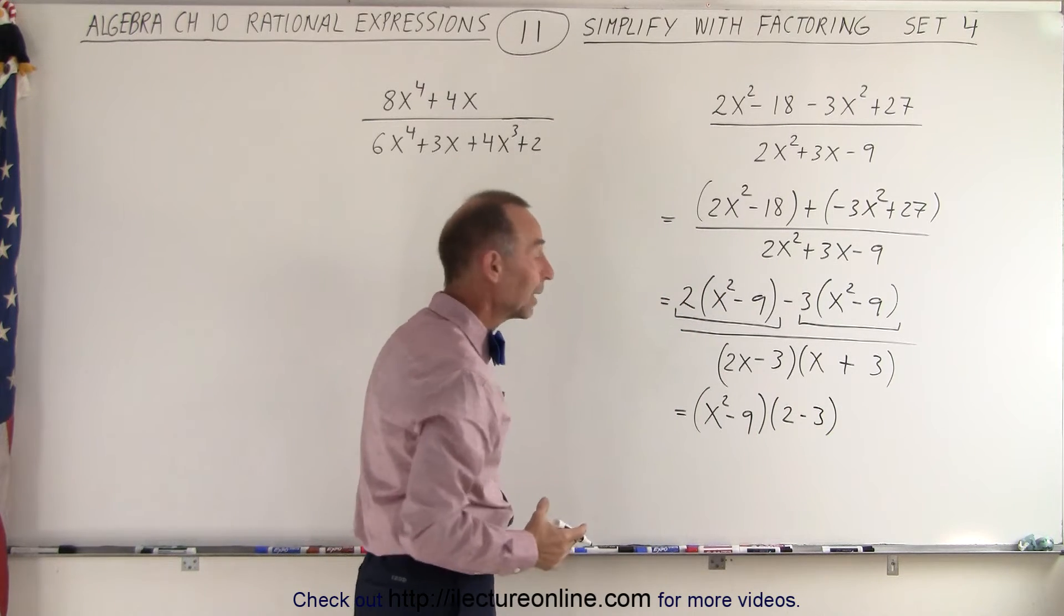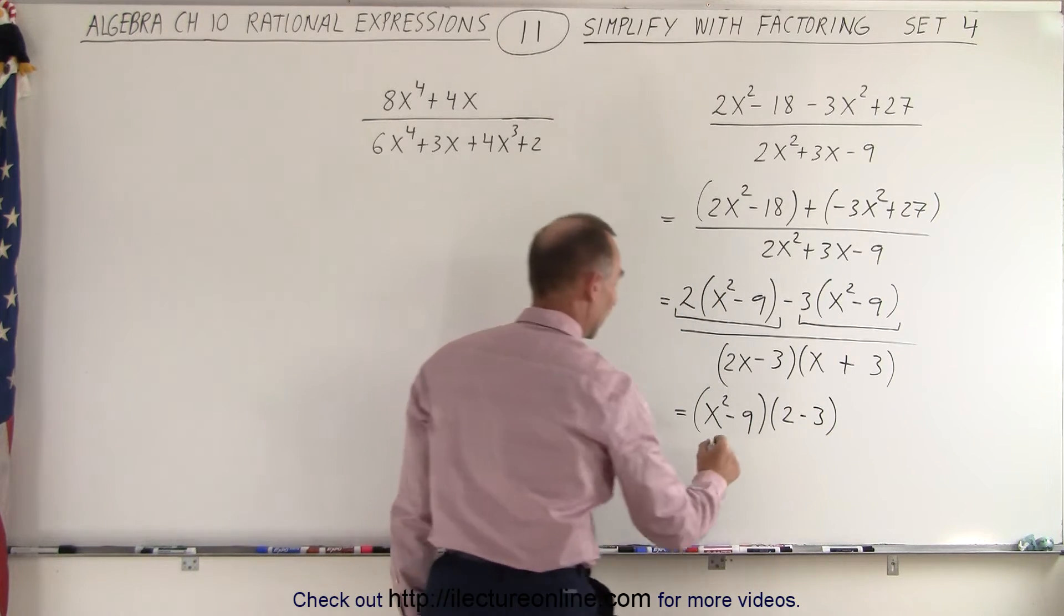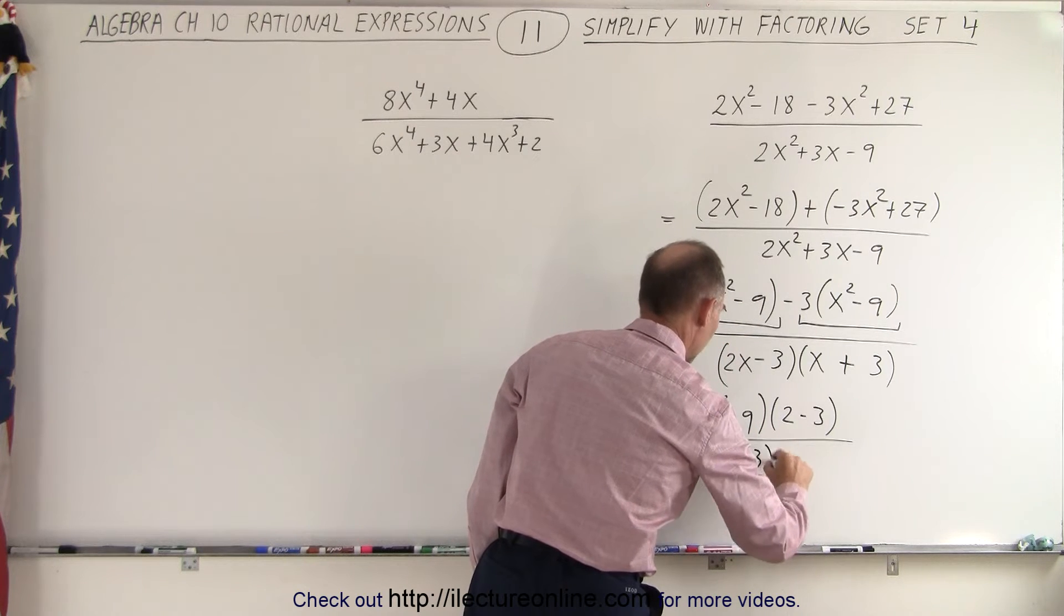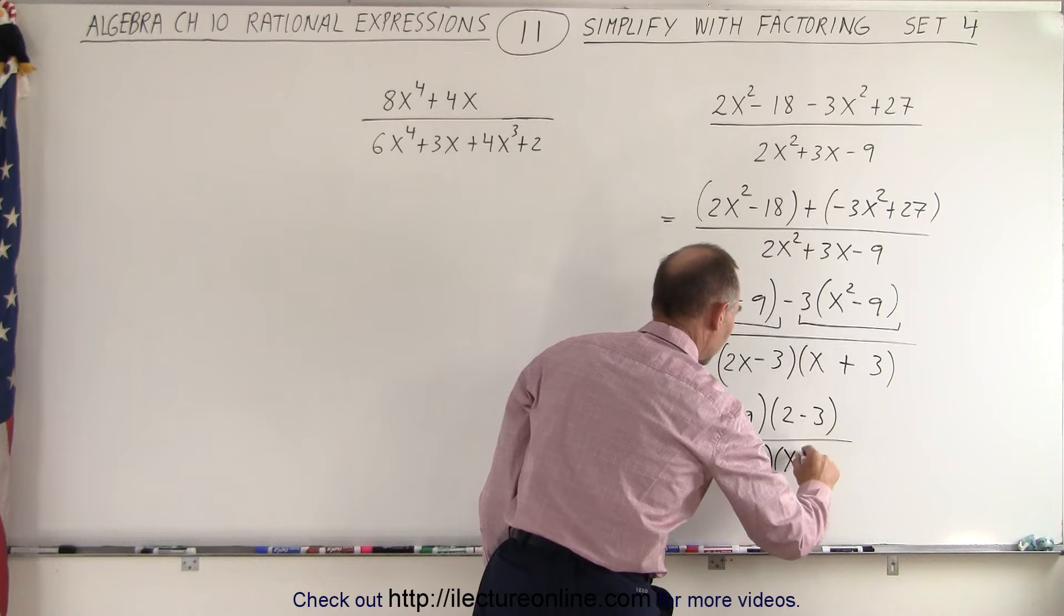Well, that can then be combined to be negative 1. In the denominator, we end up with a 2x minus 3 multiplied times an x plus 3.